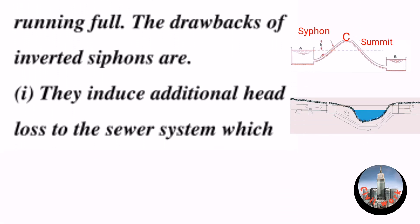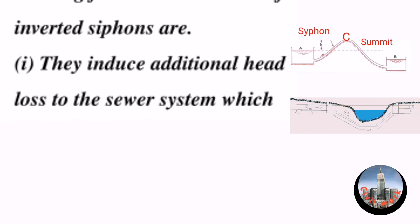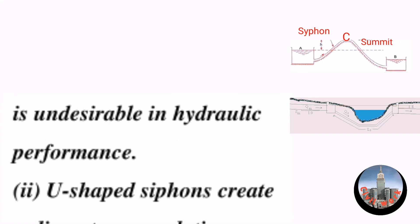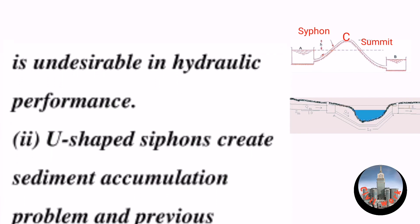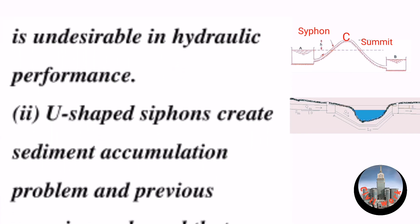The drawbacks of inverted siphons are: (1) They induce additional head loss to the sewer system, which is undesirable in hydraulic performance.